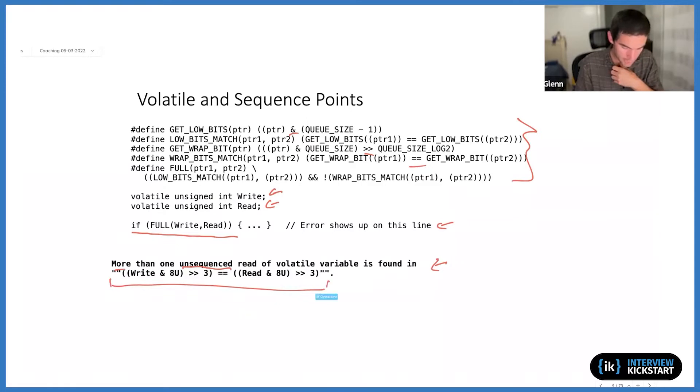more than one unsequenced read of volatile variables is found in this code. And this right here happens to just be a portion of, I think it's this right here. So the compiler expanded these macros and ultimately had this code right here, where we have write ended with the number eight, read ended with the number eight, and some shifts in equality checks.